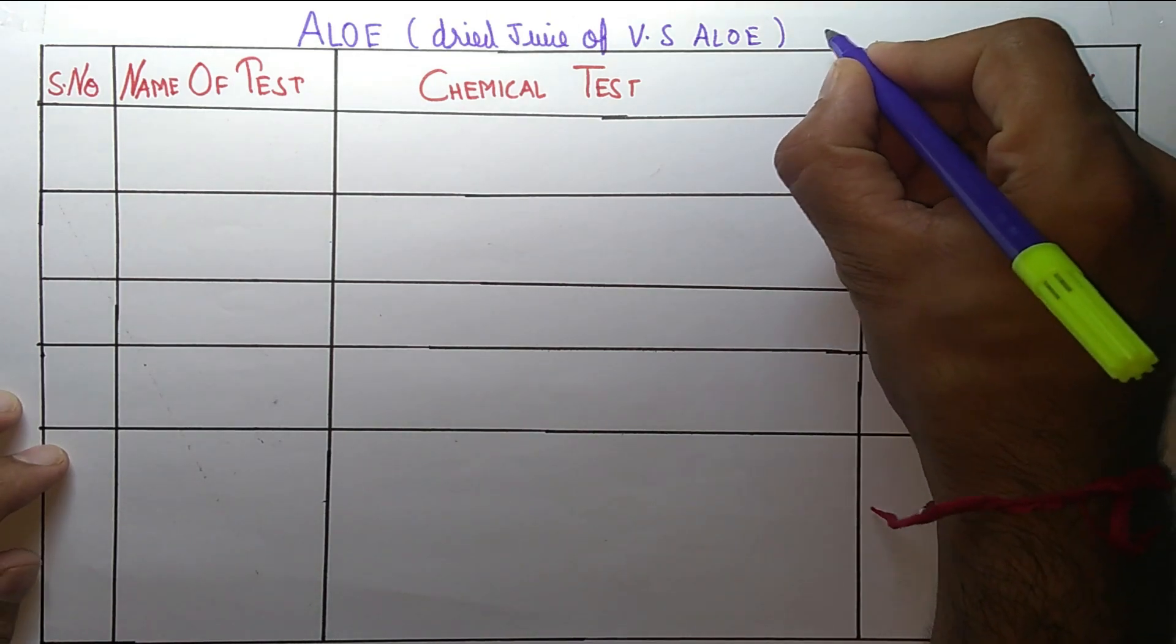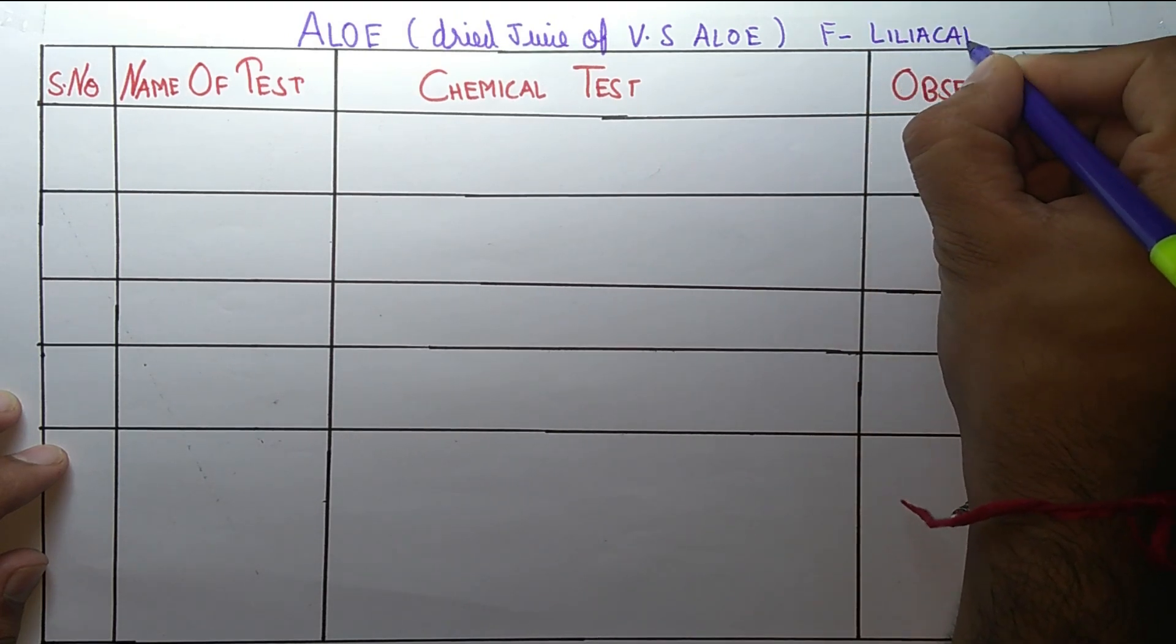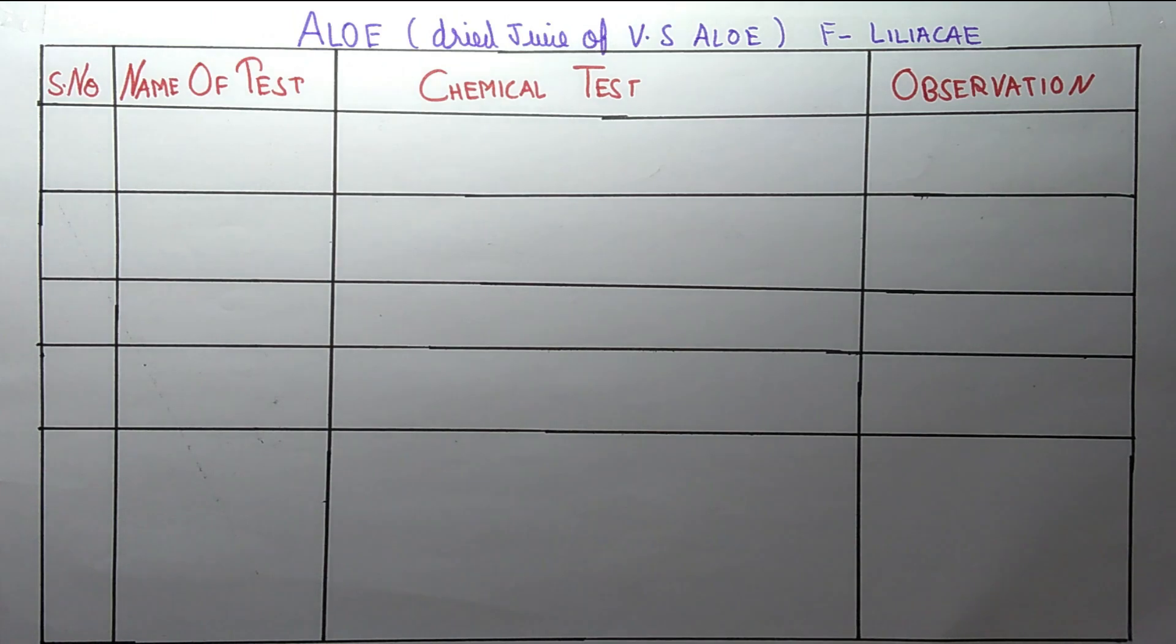What is the family of aloe? Aloe's family is Liliaceae. Coming on the first test of aloe.